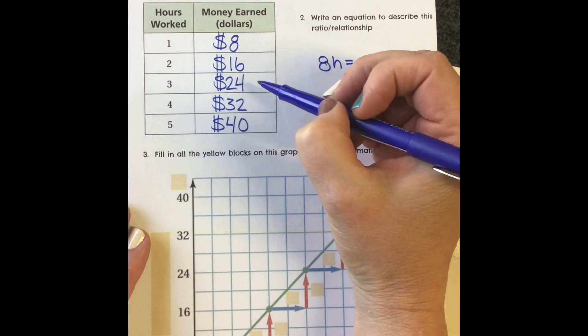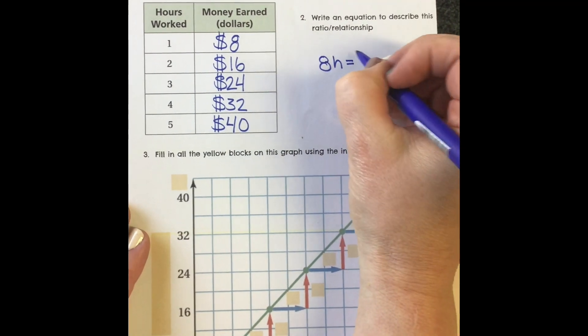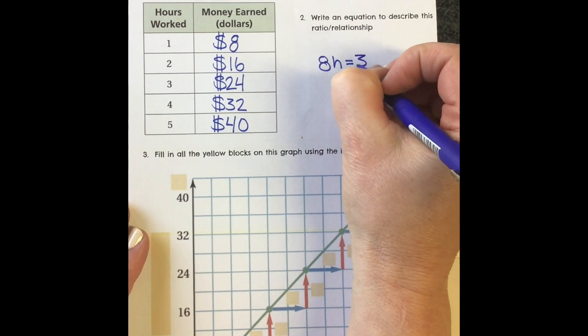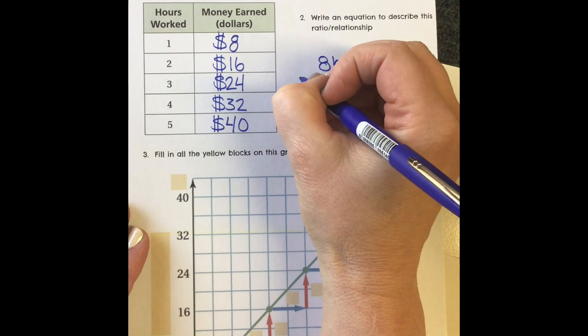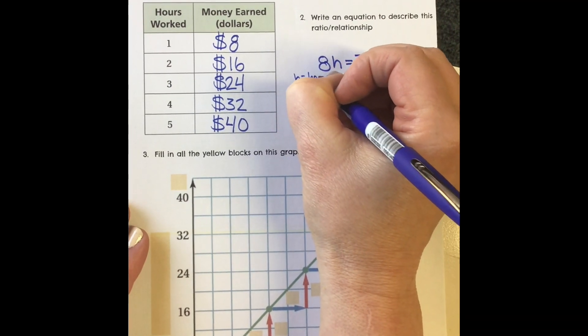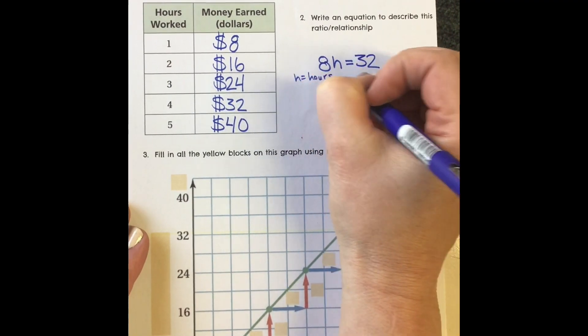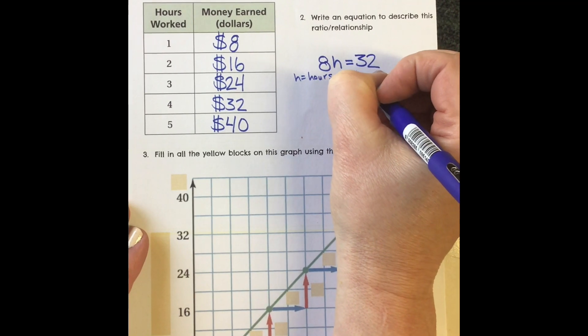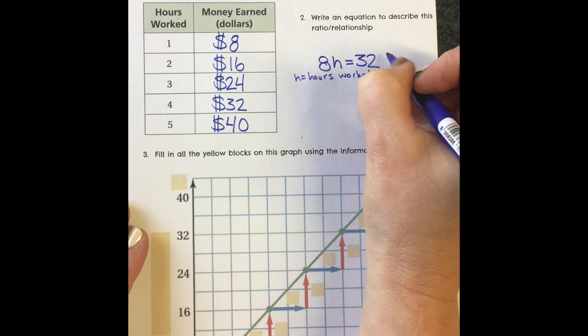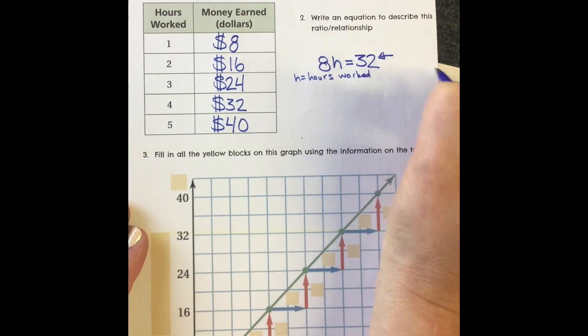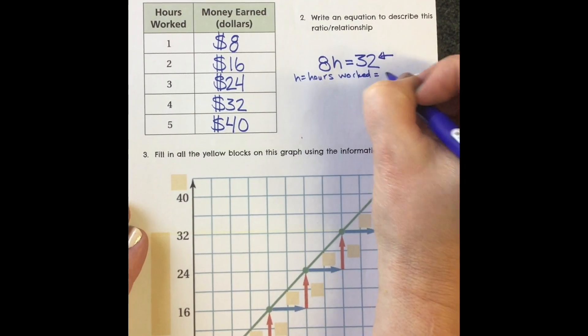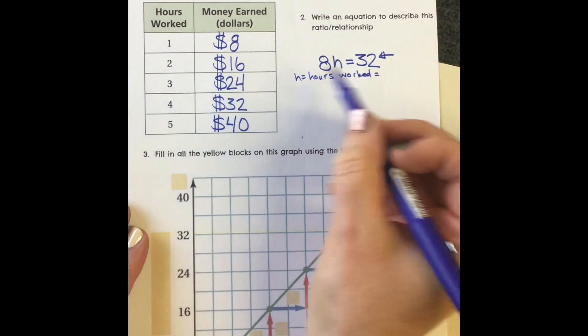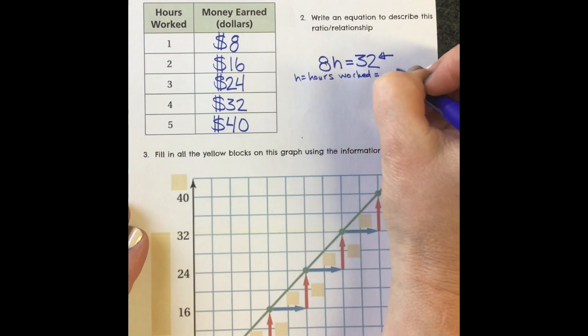So here, if I said 8 times H equals 32, and H equals the hours worked, then when I have earned $32, H will equal 4.